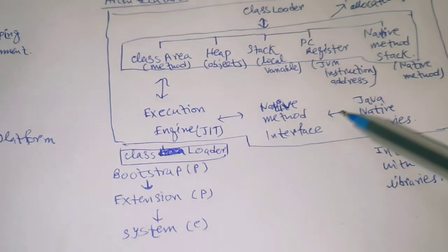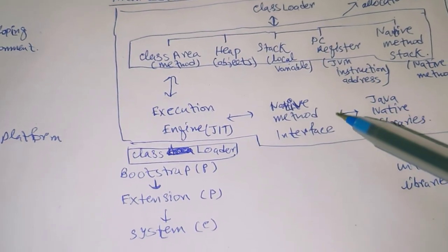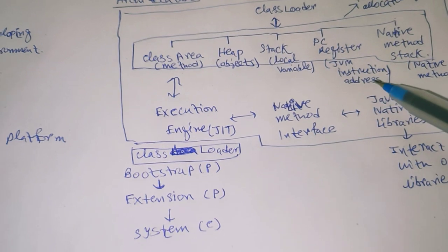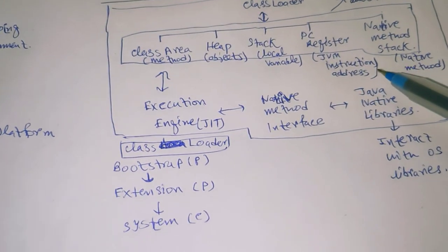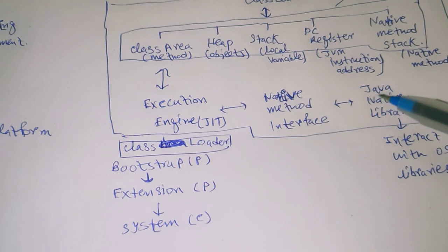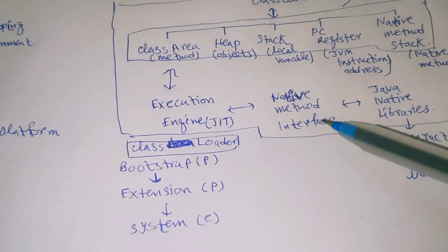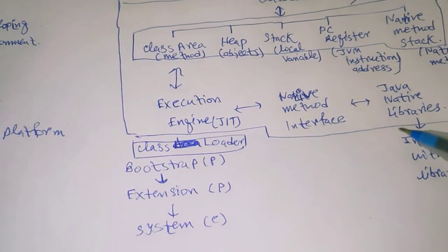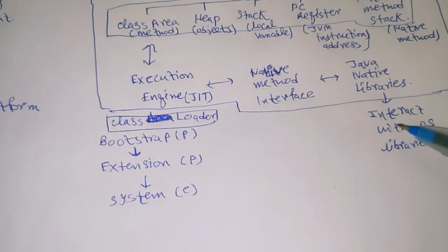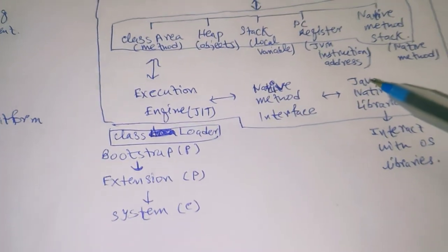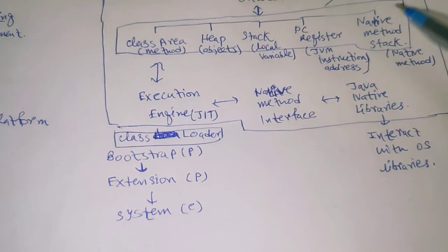Next is the native method interface and Java native libraries. The native method interface provides an interface for Java to interact with other OS applications or OS libraries. Java Native Interface and Java native libraries are used to interact with OS libraries which are not written in Java code, as well as other environments inside the OS.